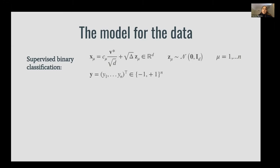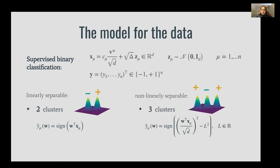We consider the noisy regime where the variance of the noise delta is such that even if one knew exactly the centers of the Gaussian clouds, one would still make a finite fraction of mistakes. We study two variants of this model, one that is linearly separable with just two Gaussian clusters. In this case, the network is simply a threshold linear classifier.